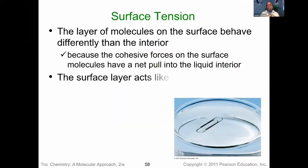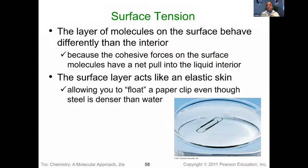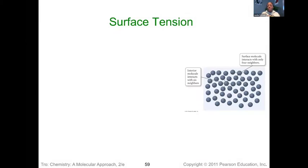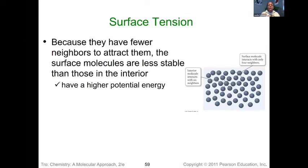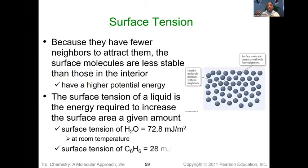The layer of molecules on the surface behaves differently than those interior molecules, because the cohesive forces on the surface molecules have a net pull into the liquid interior. They really act as a surface layer like an elastic skin and they even allow you to float things on top of them. Their role is to keep the other molecules beneath them together, working to stay adhered to one another to keep that liquid intact. Several things impact surface tension, but one of the big factors is intermolecular forces.